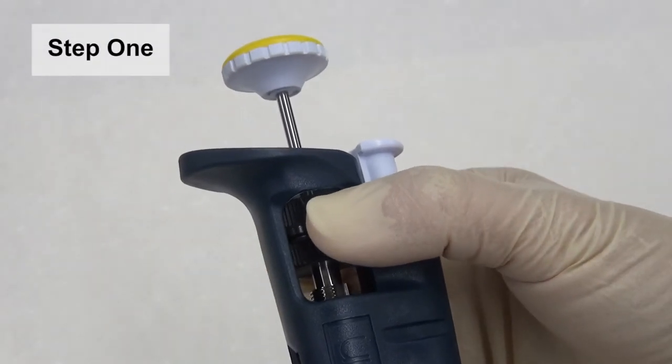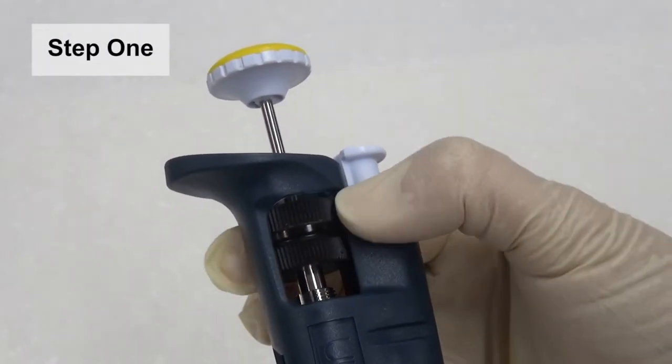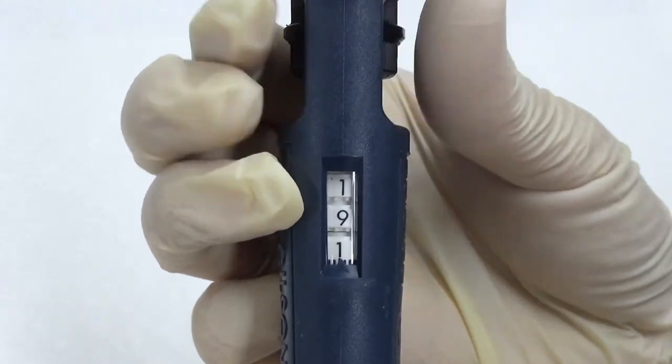Step 1: Please twist the volume adjustment dial to the volume to be aspirated. Pay special attention to the scale of the digits.